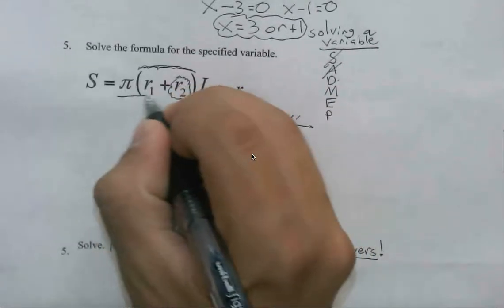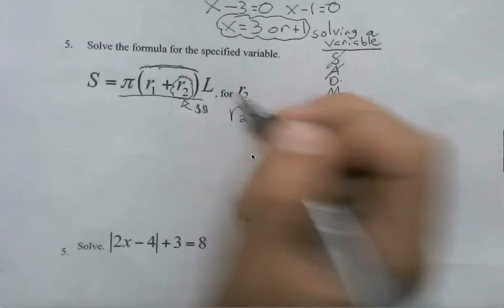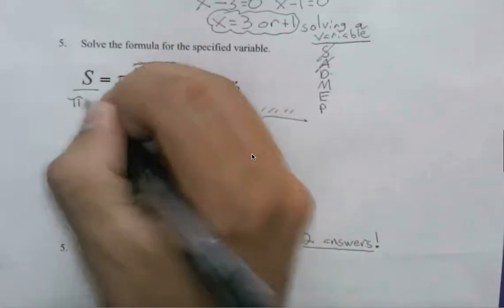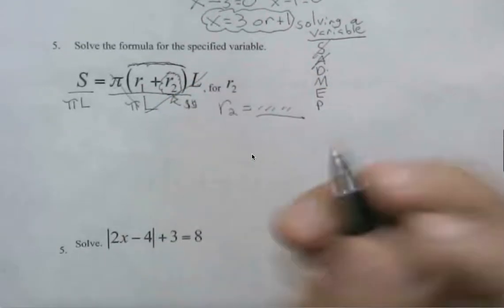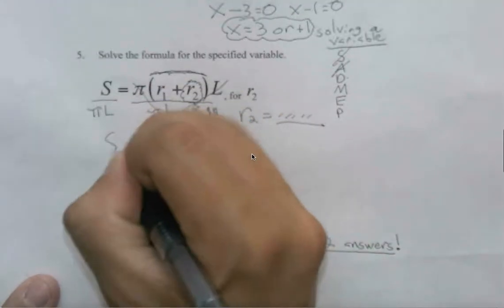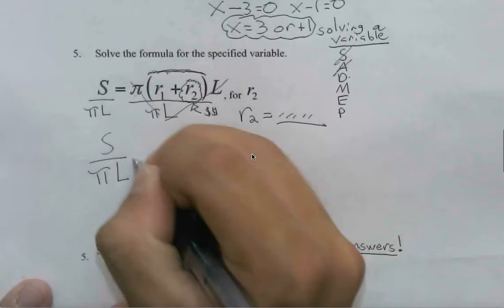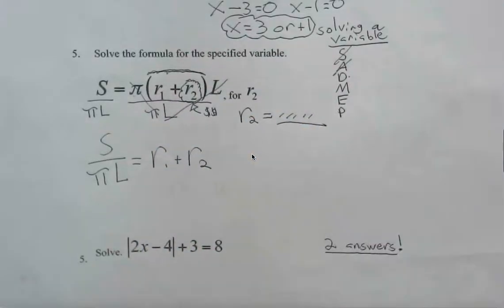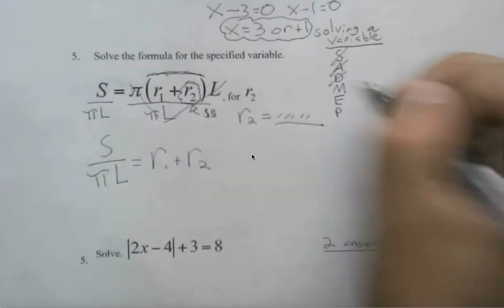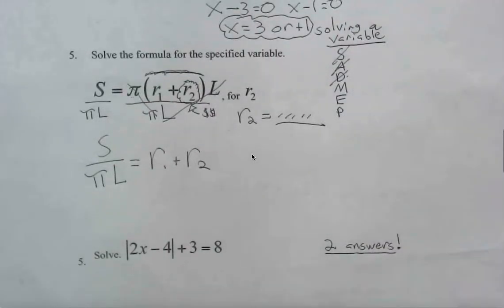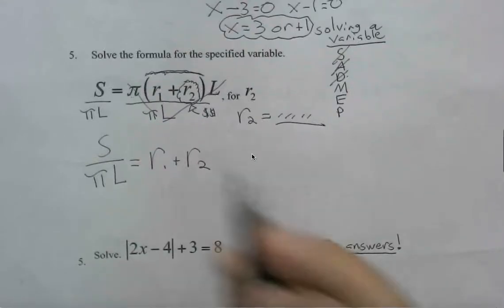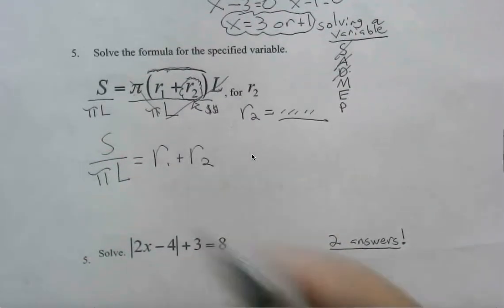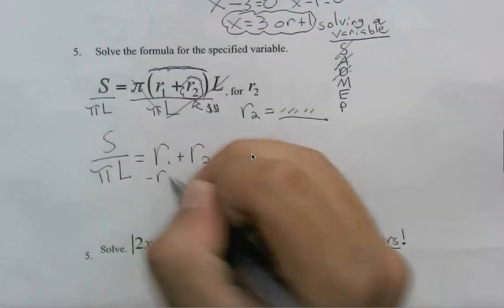So pi and L, we want to get rid of those because this is hindering us from breaking out R2. And the only way we can do this is by dividing. So we can acknowledge that pi and L are outside the parentheses. So we divide both sides by pi and L. Pi and L will cancel. This then leaves us with S over pi L equals now R1 and R2.